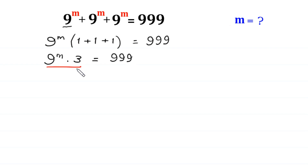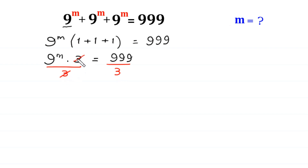Now from here we divide both sides by 3. At the right side we divide by 3. This 3 will be cancelled out with this 3, and at the left side we are left with 9 to the power m is equal to 999 divided by 3, which is 333.